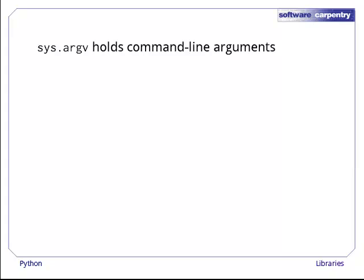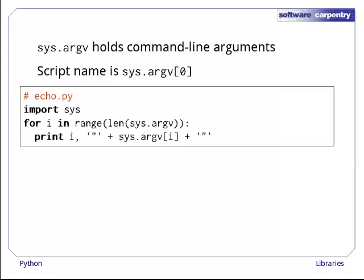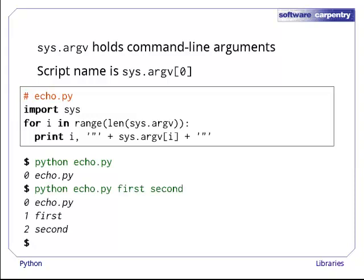The most commonly used element of sys is probably sys.argv, which holds the command line arguments of the currently executing program. In keeping with Unix conventions, the name of the script itself is put in sys.argv of 0. All the arguments given to the script when it was run are put in sys.argv 1, sys.argv 2, and so on. For example, here's a program that does nothing except print out its command line arguments. If it is run without any arguments, it just reports that sys.argv of 0 is echo.py. When it is run with arguments, it displays those as well.